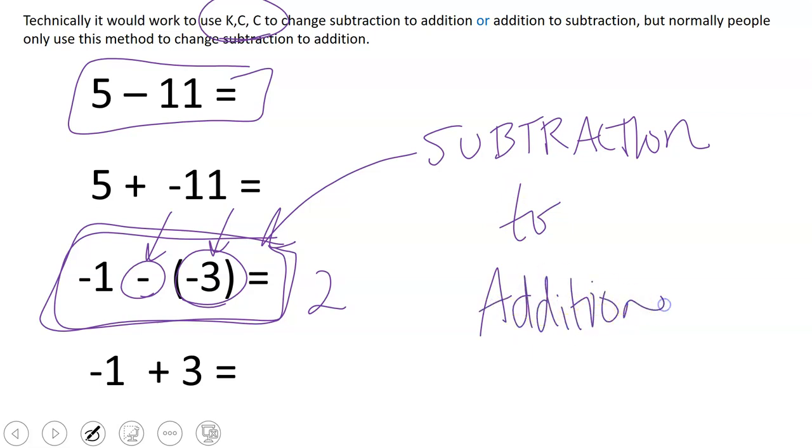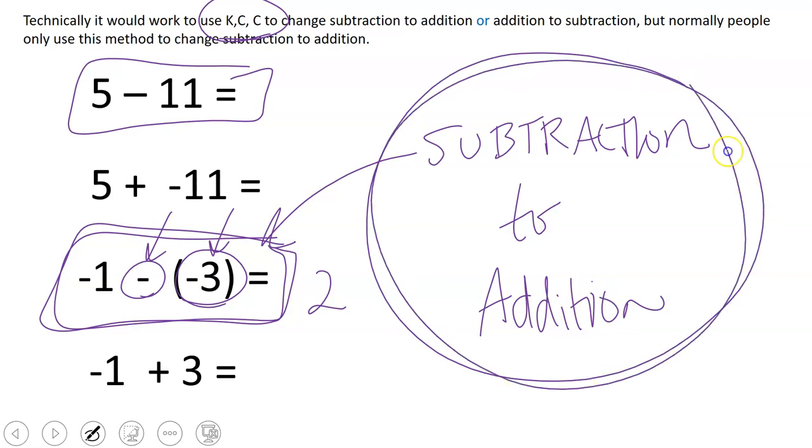So the keep change change method is used for this. So when you see subtraction, I would like you to change the subtraction to addition because it is easier for us to add with negative numbers and positive numbers than it is to subtract with negative and positive numbers. Thank you.